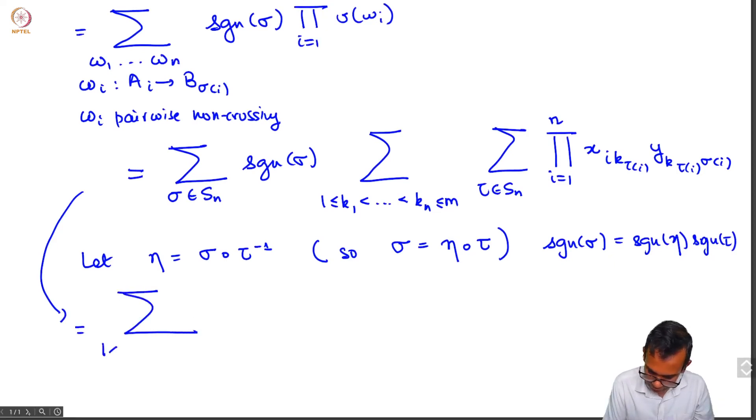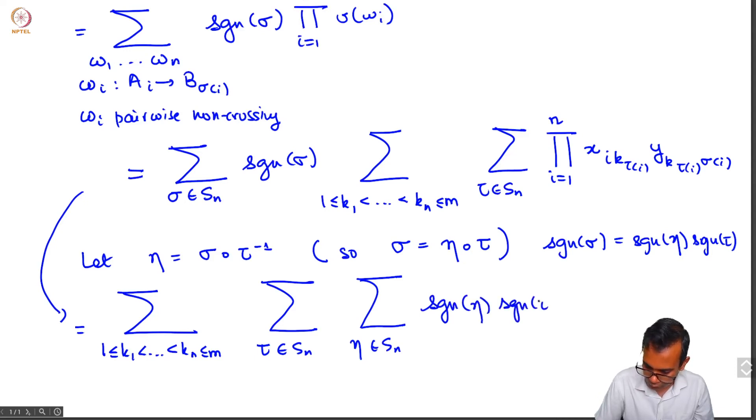And so what we have is that the sign of sigma is sign of eta times sign of tau. So we write this sum as sum over all: let's rearrange this sum, 1 less than k1 less than or equal to kn less than or equal to m, sum over tau in Sn, sum over eta in Sn, sign of sigma which is the same as sign of eta times sign of tau.